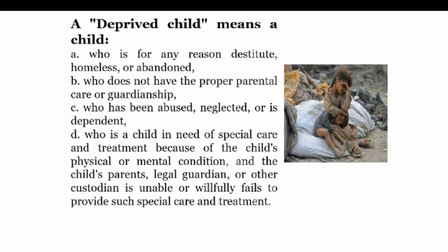The points which come under a Deprived Child: First, a child who is either homeless or abandoned by their parents or any legal guardian. Second, where they are not getting proper parental care — no one is guiding them as a parent or guardian would. Third, when they are being abused or neglected, and their guardian, instead of explaining things to the child, is beating or using abusive language to address them.